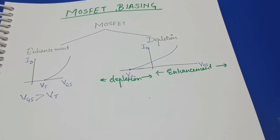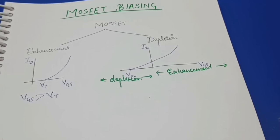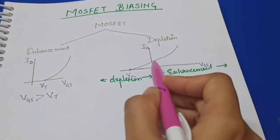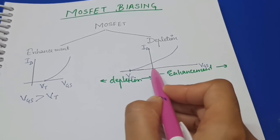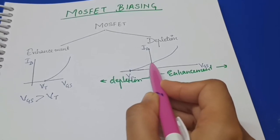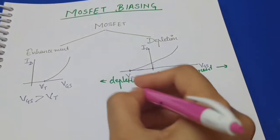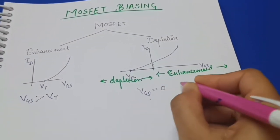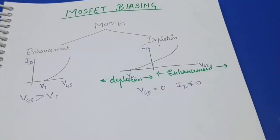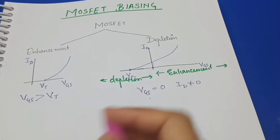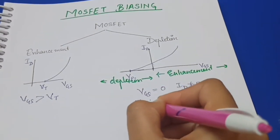In enhancement MOSFET, the channel does not exist initially and is developed by applying voltage at the gate terminal. In depletion MOSFET, the channel is permanently fabricated at the time of construction. That is why when VGS equals zero, there is still some drain current because the channel already exists. So when gate to source voltage is zero, the drain current is not equal to zero.